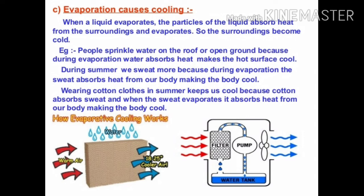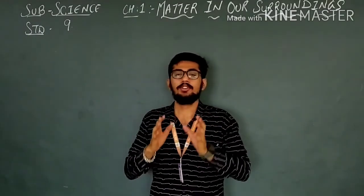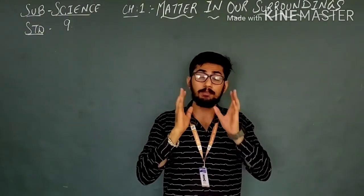Evaporation also produces a cooling effect. The best examples are our normal house coolers and earthen pots. The liquid absorbs heat from the surrounding and converts into gas. Because heat is absorbed from the surroundings, a cooling effect is created — the surrounding area becomes cool. Because of this, when you sprinkle water on your roof, evaporation happens, water absorbs heat, and your house feels cool. During summer, sweat does the same work. Because of that, our cotton clothes feel more comfortable and cool compared to other clothes. Over here we have completed our chapter, covering everything possible.